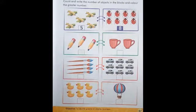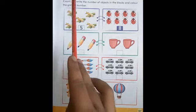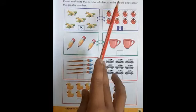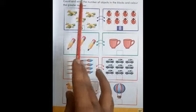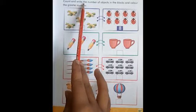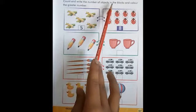Dear students, assalamualaikum, hope you are fine. Today our topic is greater or smaller numbers. Greater numbers kate hai bade numbers ko, aur smaller numbers kate hai chote numbers ko. Count and write the number of objects in the blocks and color the greater number.